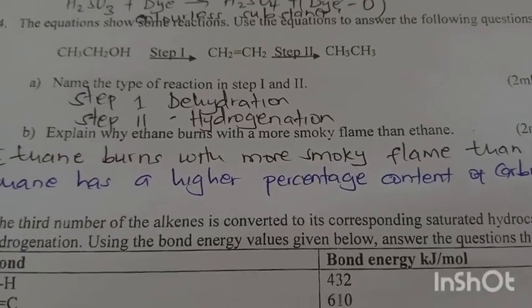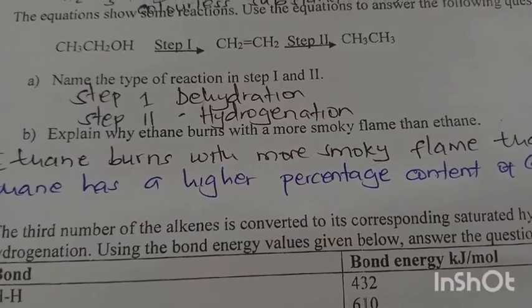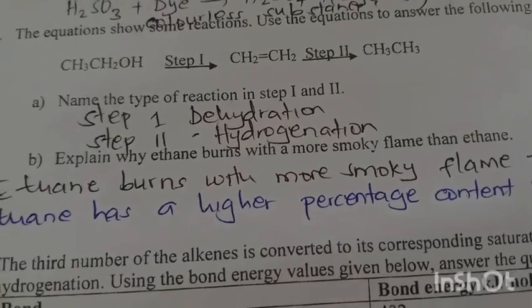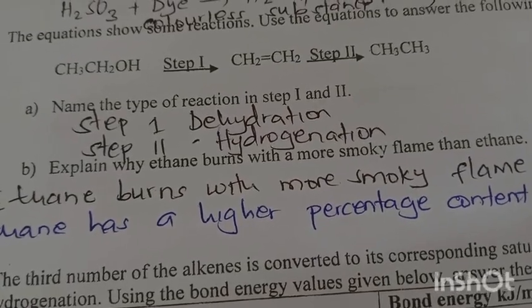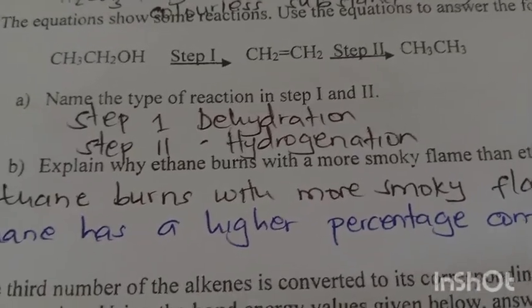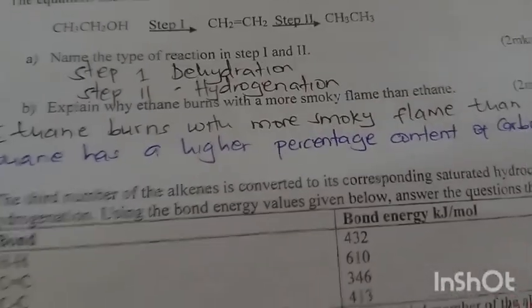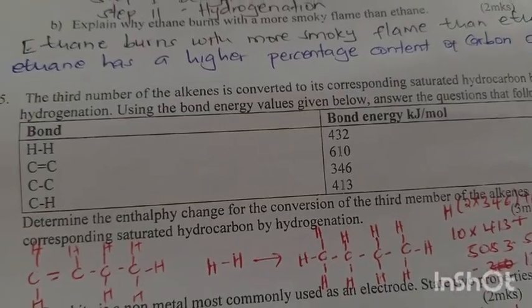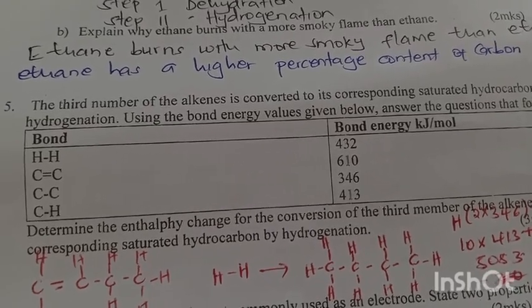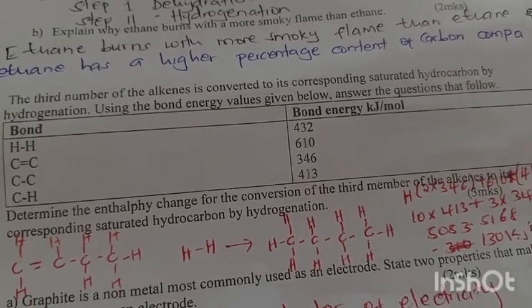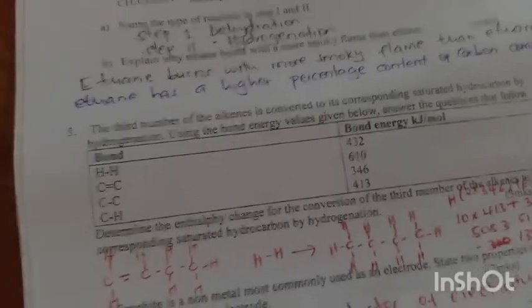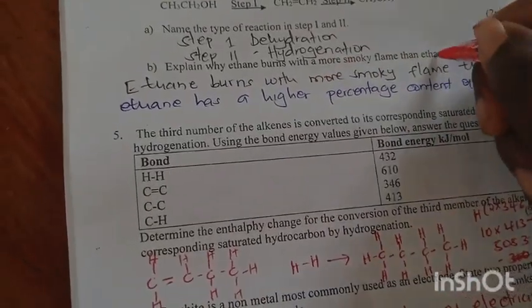The equation shows some reactions. Ethanol in step one turns to ethene through dehydration - you remove the water in that alcohol to give an alkene. Step two: alkene, you are breaking the bond to become alkane through hydrogenation using platinum catalyst. Ethene burns with a more smoky flame than ethane because it has higher percentage of carbon.